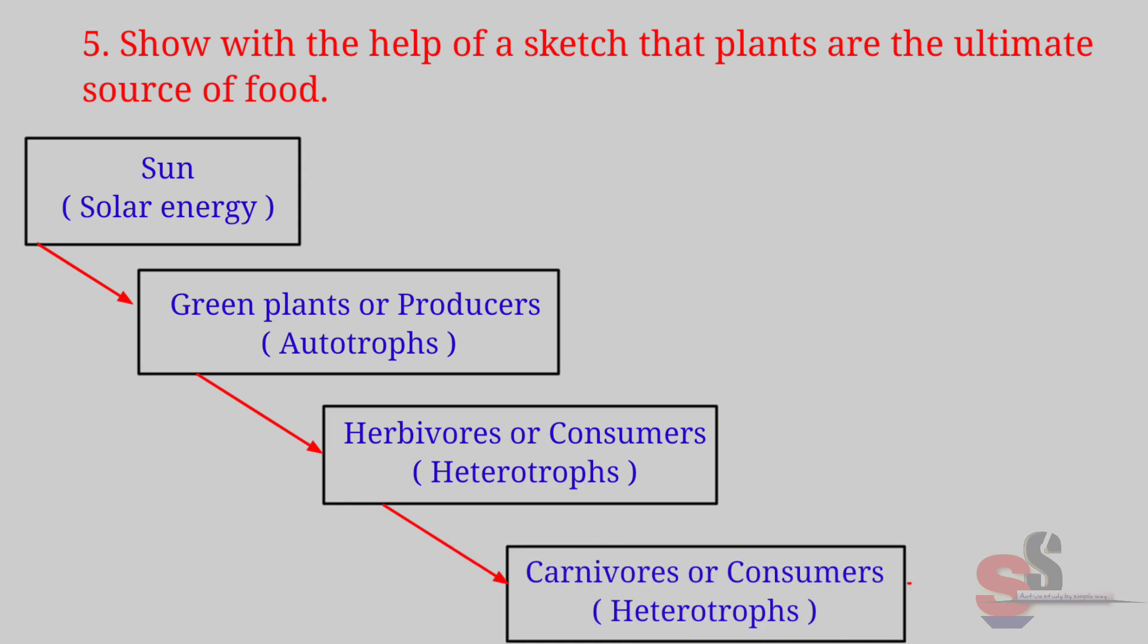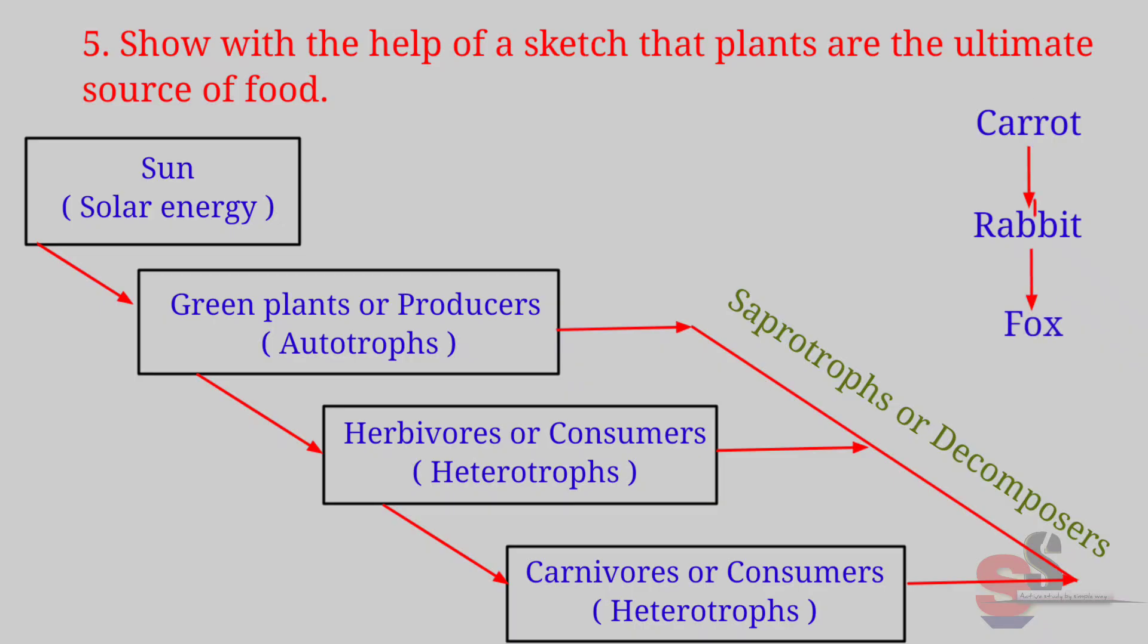Then carnivorous or consumers (that means heterotrophs). On death and decay, saprotrophs or decomposers. For example, carrot makes their own food in the presence of sunlight, carrot is eaten by rabbit, rabbit is eaten by fox, and fox is eaten by lion. This food chain shows that plants are the ultimate source of food.